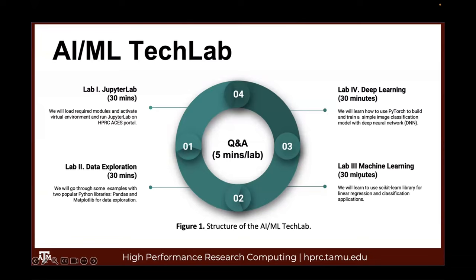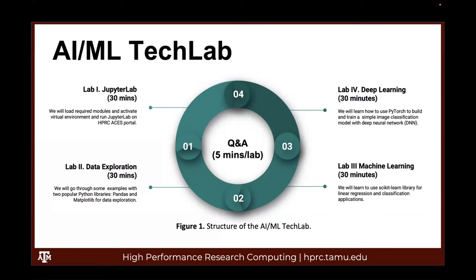The third lab section is machine learning. We will use the scikit-learn library for linear regression, classification, and clustering applications. The fourth lab is deep learning — we will learn how to use PyTorch to build and train a simple image classification model with deep neural networks. Our main focus for today is to let you get on the ACES cluster so you can explore the different resources on this computing cluster using some AIML workflows.